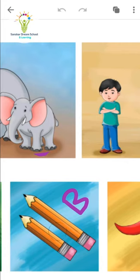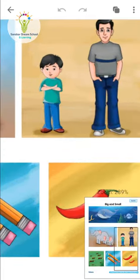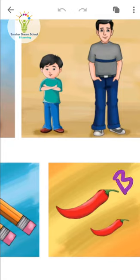Now we will move to the last picture. It is about two chilis. Aur iska color kaun sa hai? Red — very nice! So iska color red hai. Now we will see which one is big. The first one — is it big or small? Yes, very nice — the first picture is big.